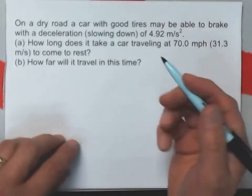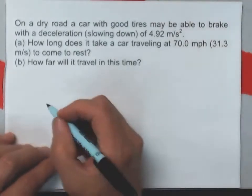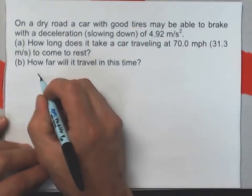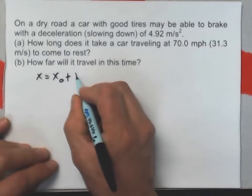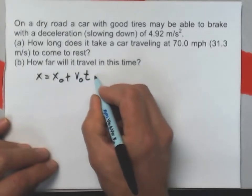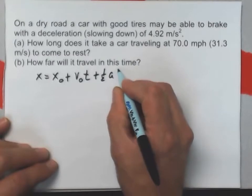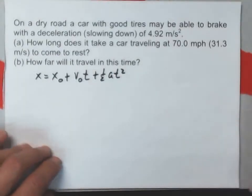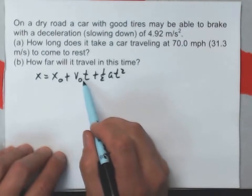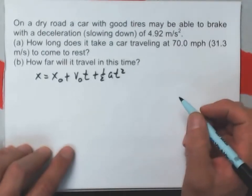I can write down my constant acceleration equations here. They are x equals x naught plus v naught t plus 1 half at squared. All my motion here is going to be in the x direction, so I'm not going to bother with putting a little x on the velocity.